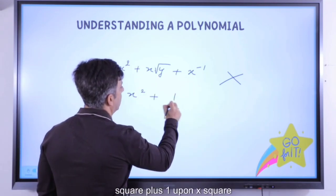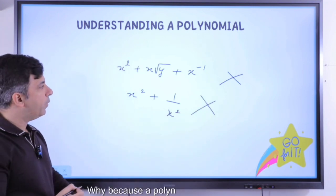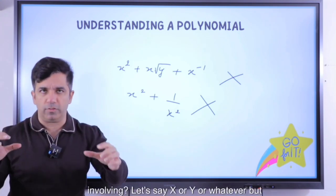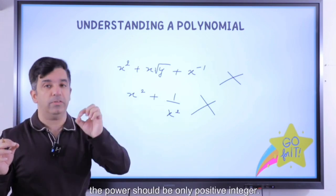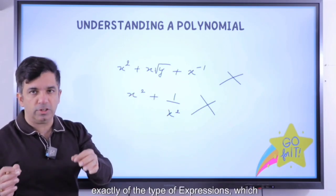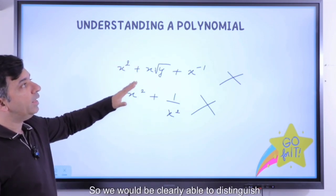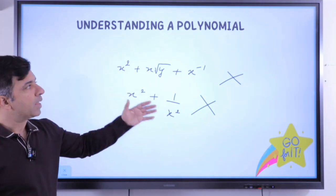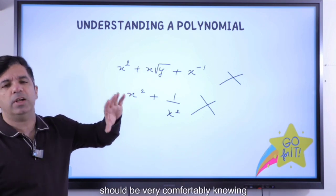Similarly, x² + 1/x² is not a polynomial, because a polynomial requires every term involving a variable to have only positive integer powers. In this case, 1/x² means x^(−2), which fails that condition. We can clearly distinguish: this expression is a polynomial and this is not. That is the basic difference we should be very comfortably knowing.